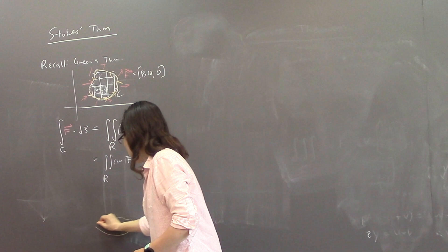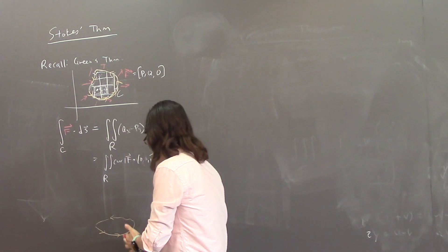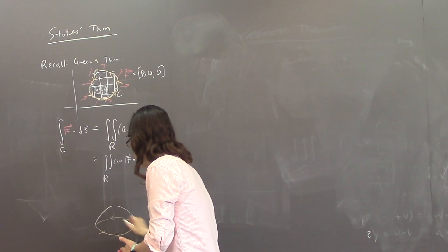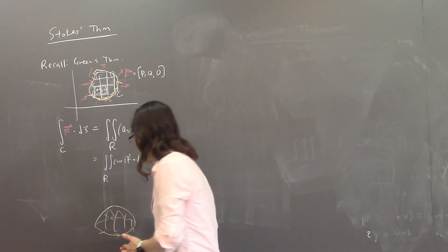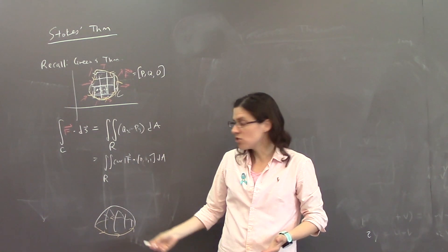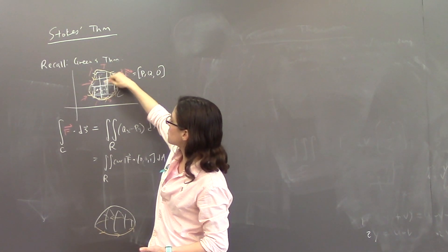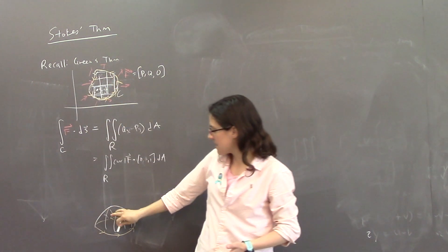there's an oriented boundary curve going around, and then here's the surface coming out. And so if you were to break up, do these little squares everywhere, well, you can do the same thing here.